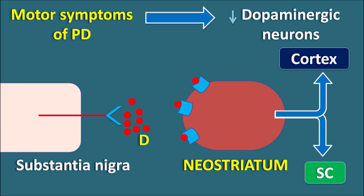Dopamine produces an inhibitory response, thereby controlling the motor functions of the body. But in Parkinson's disease, there is a loss of dopaminergic neurons because of neurodegeneration, which results in decreased release of dopamine, such that the inhibitory response of dopamine is reduced. Due to lack of dopaminergic transmission, motor functions are not thoroughly controlled, which results in motor dysfunctions like muscle rigidity, resting tremor, and bradykinesia.